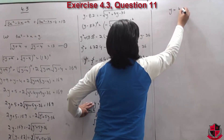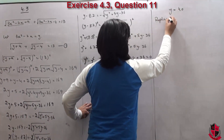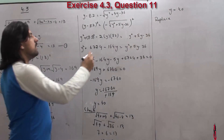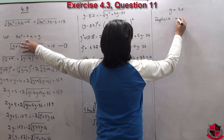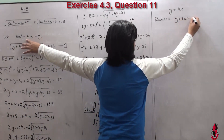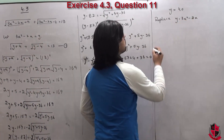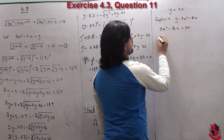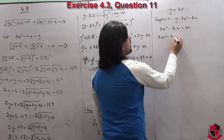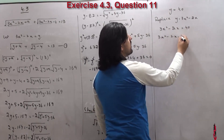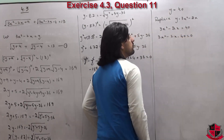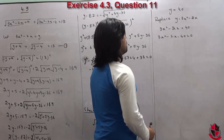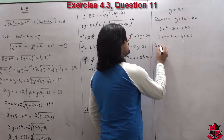Now replace y back into the original variable. हमने y = 3x²-2x लेट किया था, so: 3x²-2x = 40. Rearranging: 3x²-2x-40 = 0. यह standard quadratic आ जाती है।